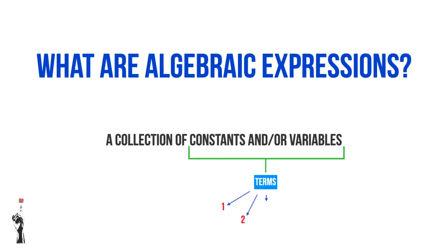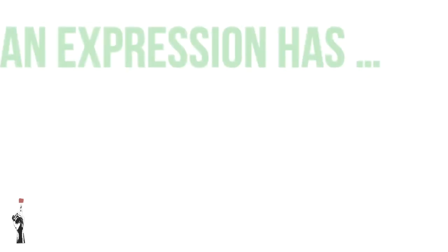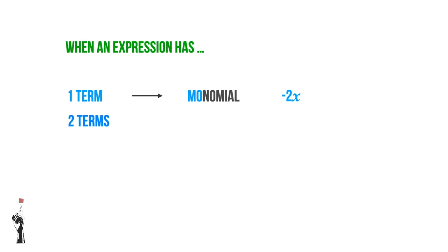When an expression has one term, we call it a monomial, as in the example of negative 2X. If an expression has two terms, we call it a binomial — 'bi' for two, such as bicycle. In this example, we have negative 2X plus 3Y.